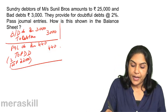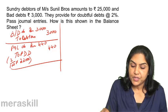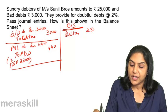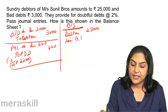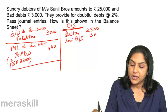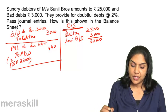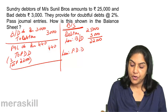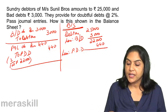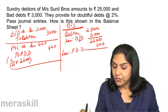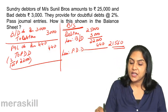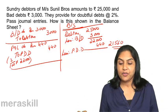How is this shown in the balance sheet? On the asset side: Debtors 25,000, less bad debts 3,000 gives 22,000; less provision for doubtful debts 440. The amount of debtors to be shown would therefore be 21,560. This is how the debtors would appear on the asset side of the balance sheet.